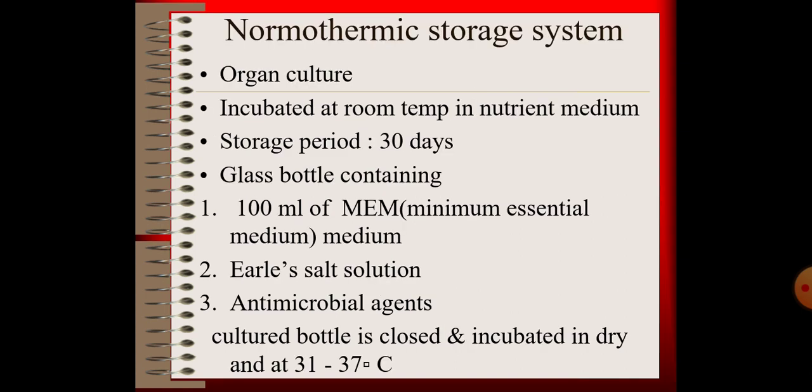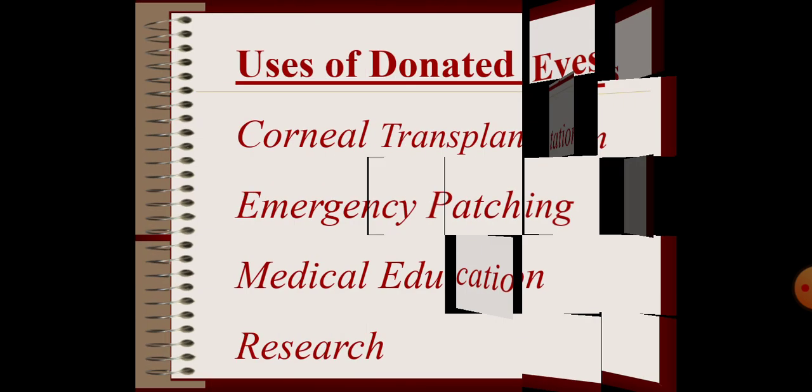Next is the normothermic storage system — organ culture. The cornea is incubated at room temperature in a nutrient medium, with a storage period of up to 30 days. A glass bottle containing 100 ml of minimum essential medium, balanced salt solution, and antimicrobial agents is used. The cultured bottle is closed and incubated dry at 31 to 37 degrees Celsius.